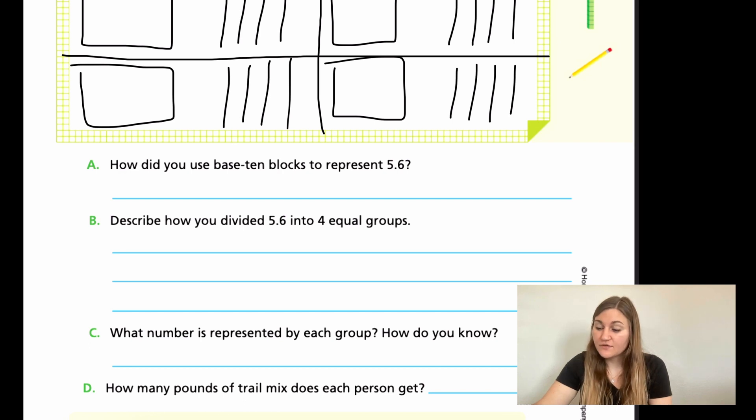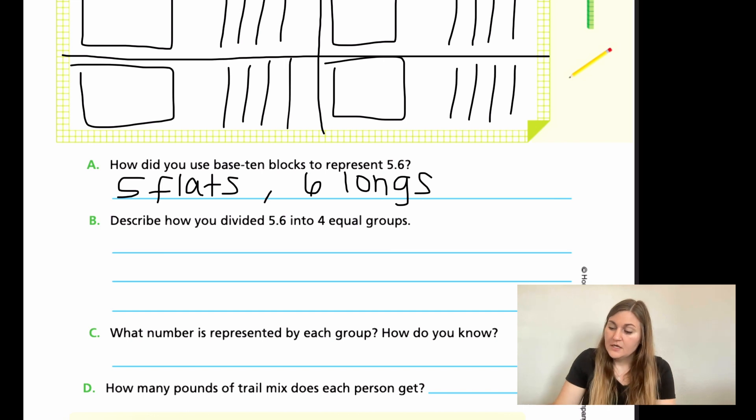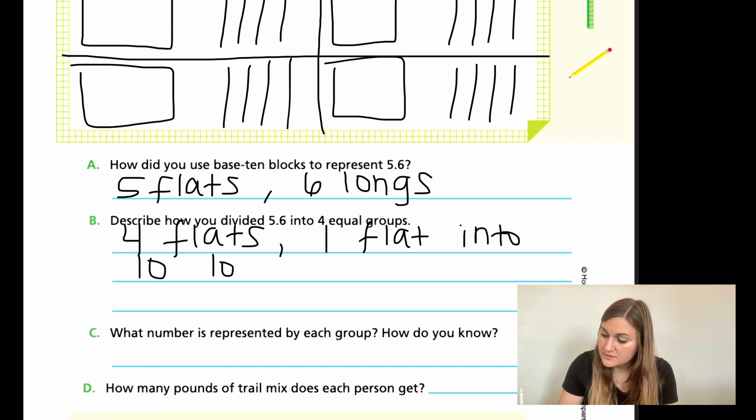Alright, great. Let's go ahead and go over this. So for A, how did you use base 10 blocks to represent 5.6? So for the five ones, I used five flats. And then for the 0.6, the six tenths, I used six longs. So describe how we divided 5.6 into four equal groups. This is where we only took four flats. Then we took one flat and we turned it into 10 longs. And then we also just had our six longs together, which equaled four flats and 16 longs.